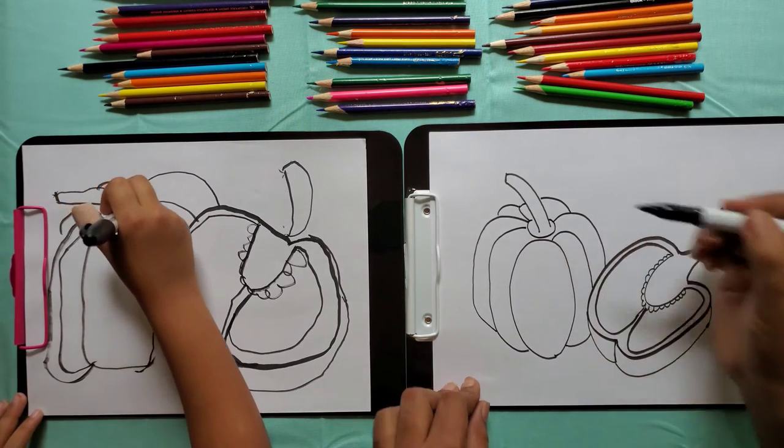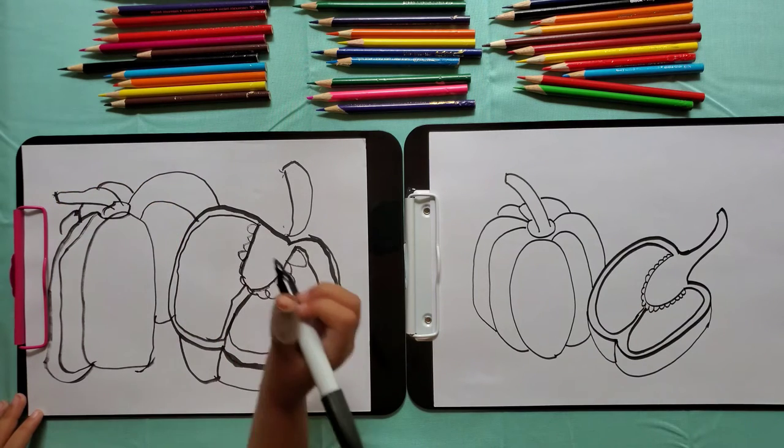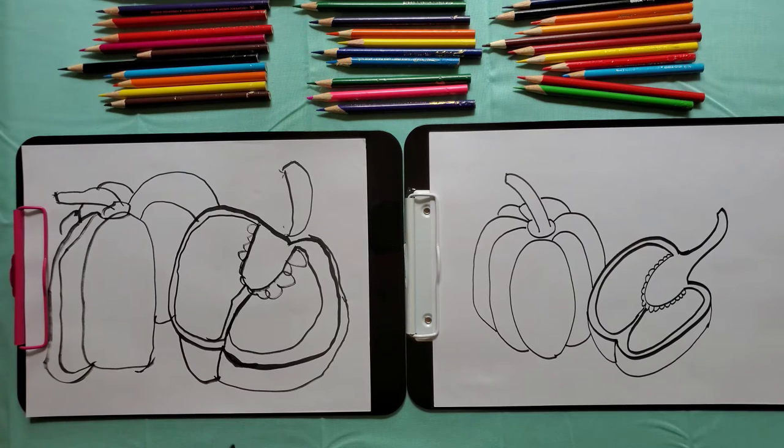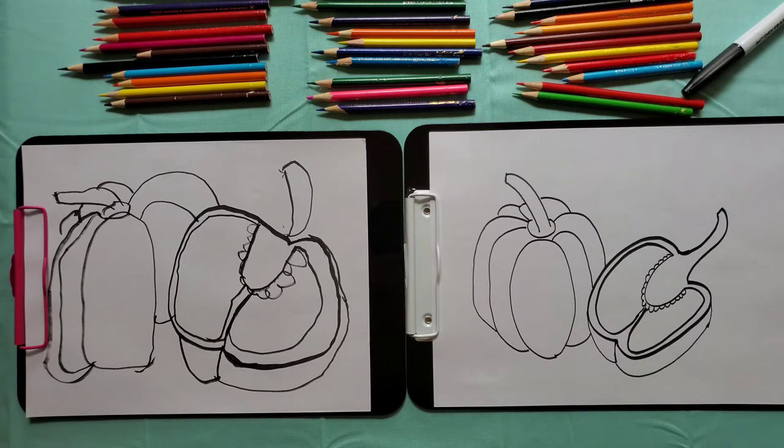Now circle like this. We're done. It's time to color. Do you know what it is? A bell pepper.